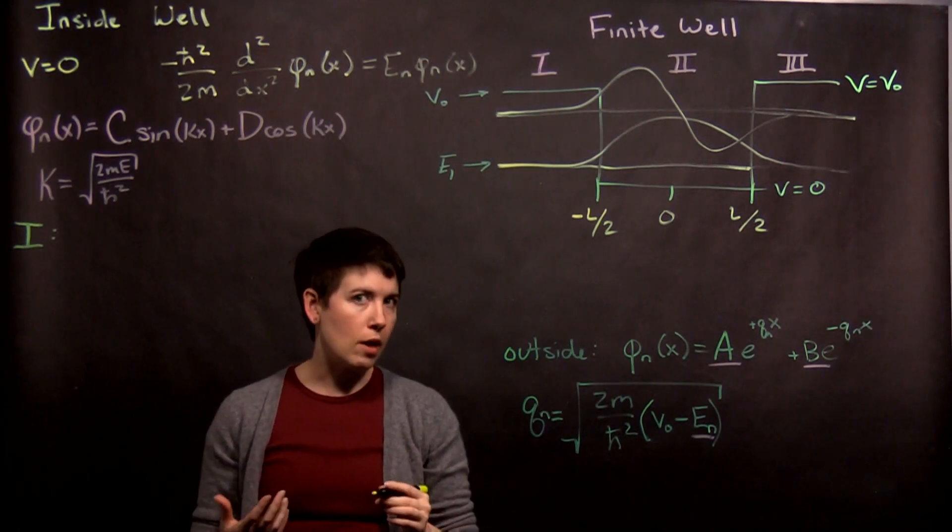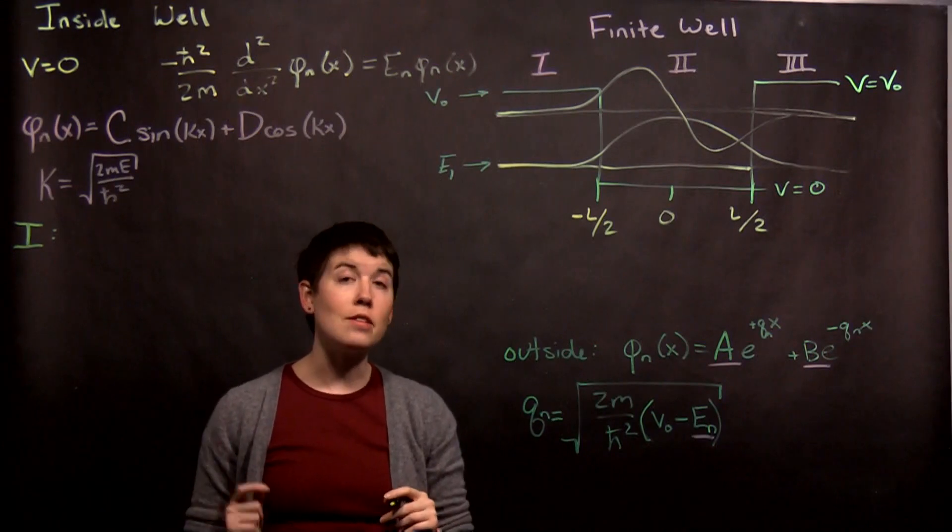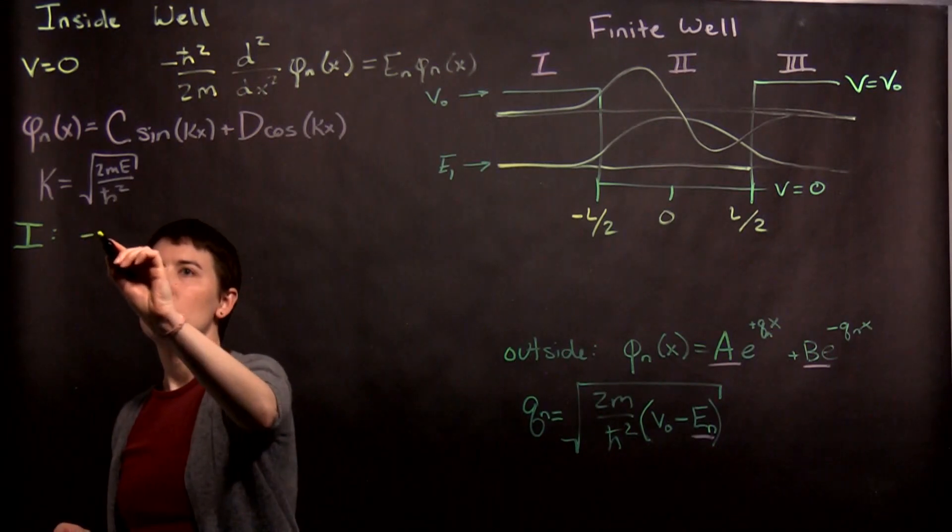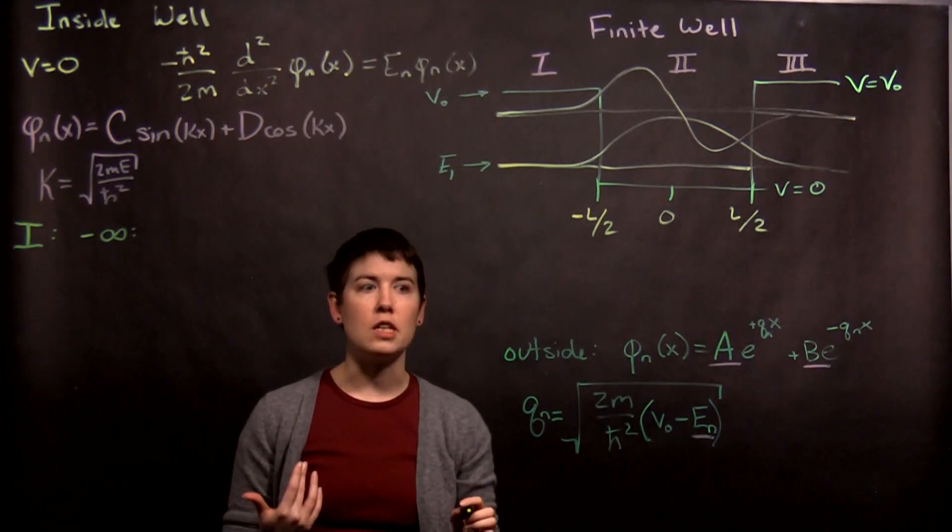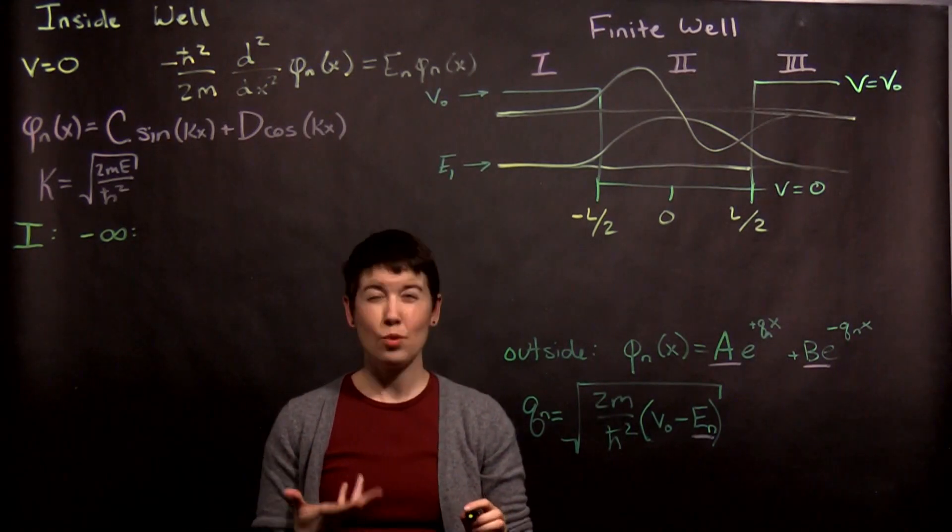So the first boundary, if we start from the left, is actually negative infinity. So at negative infinity, or as we approach negative infinity, we need our wave function to approach zero.